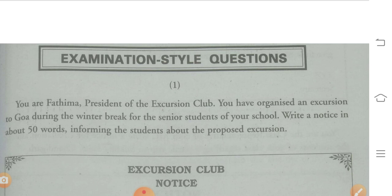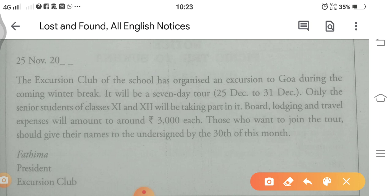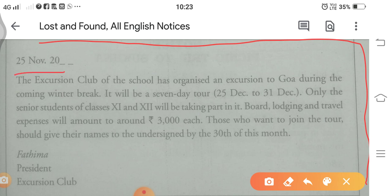You are the president of the Excursion Club. You have organized an excursion to Goa during the winter break for the senior students of your school. Write a notice in about 50 words informing the students about the proposed excursion. आपको लगभग 50 शब्दों में यह notice लिखना है। तो notice कैसे शुरू करते हैं — पहले notice का box होता है, आप box बनाएंगे, उसके बाद date left side में mention करेंगे।